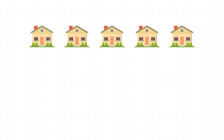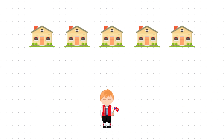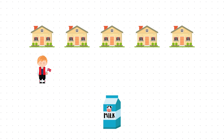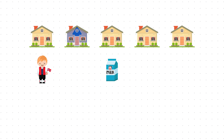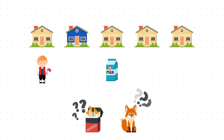There are five houses. The Norwegian lives in the first house. Milk is drunk in the middle house. The Norwegian lives next to the blue house. That means the blue house must be here. And the man who smokes Chester Fields lives in the house next to the man with the fox. Wait, what?